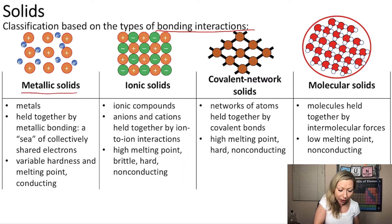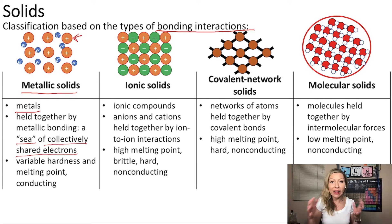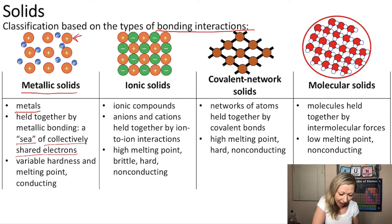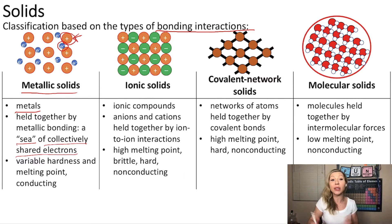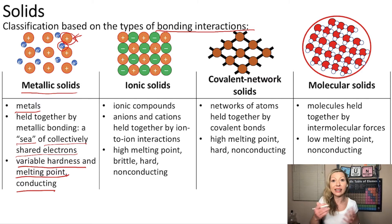Metallic solids are going to be made of metals and they are held together by an interesting sea of collectively shared electrons. The metal ions share electrons between each other — an electron might belong to one metal ion but just floats around and travels between all other metal ions, creating a sea in which the metal ions are floating. Metallic solids have variable hardness and melting point, and they actually conduct electricity.